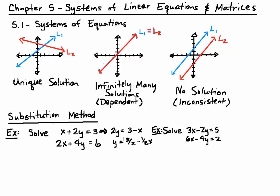And now I substitute 3 halves minus 1 half x into the y in the second equation. This will give us 2x plus 4 times 3 halves minus 1 half x equals 6.